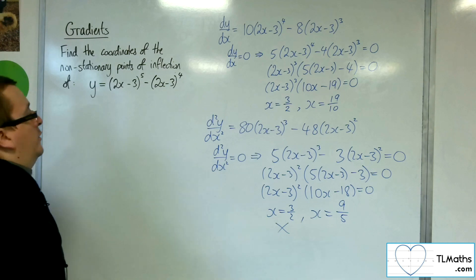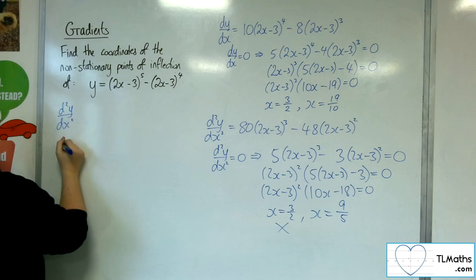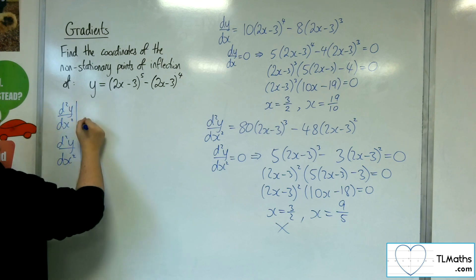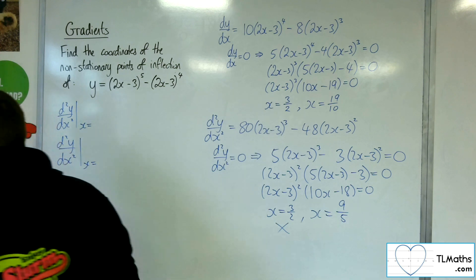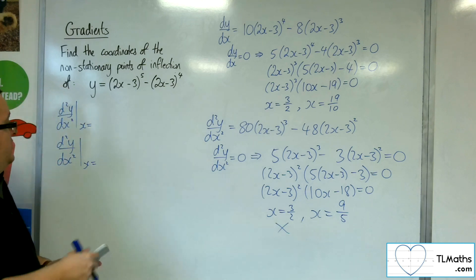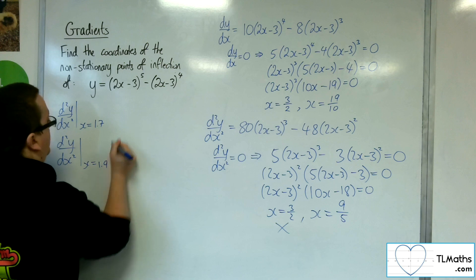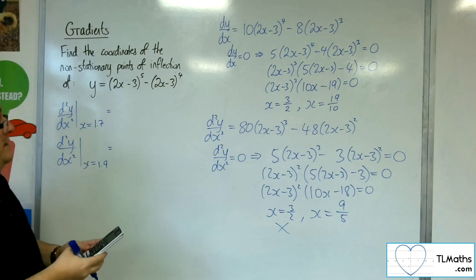So I'm going to have to look either side of the second derivative, either side of that point in the second derivative, to see if we've got a change in sign from convex to concave or vice versa. So 9 fifths, 1.8, so let's look at 1.7 and 1.9, and we're going to substitute these points into the second derivative.